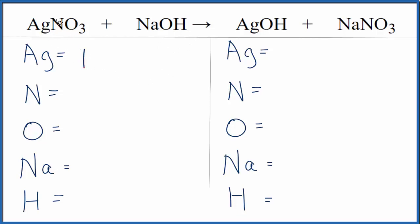We have one silver, nitrogens one, oxygens three. Be careful though because we have one more right here. So we have four oxygen atoms. Sodiums we have one and then one hydrogen.